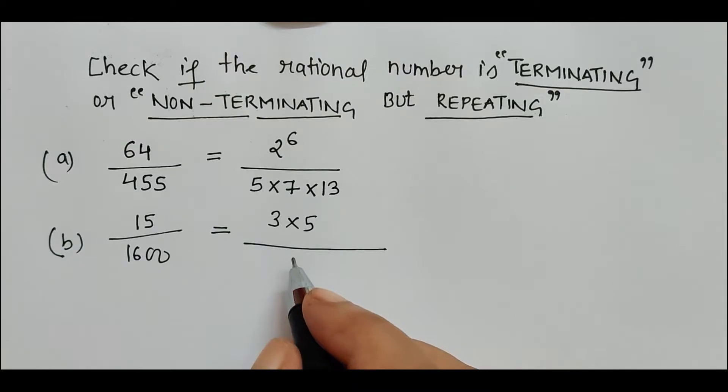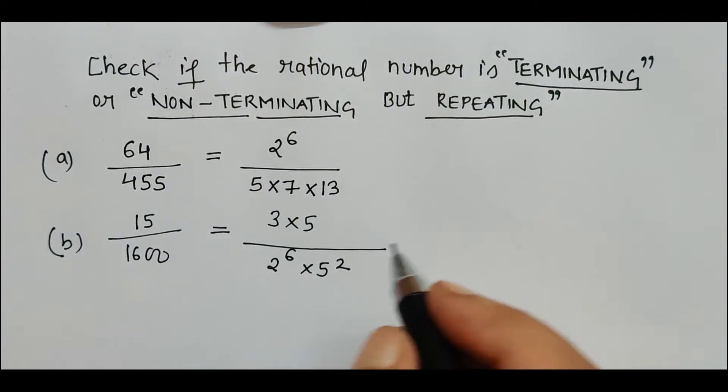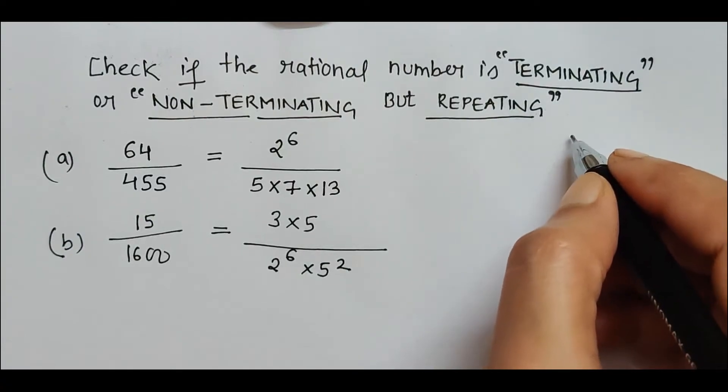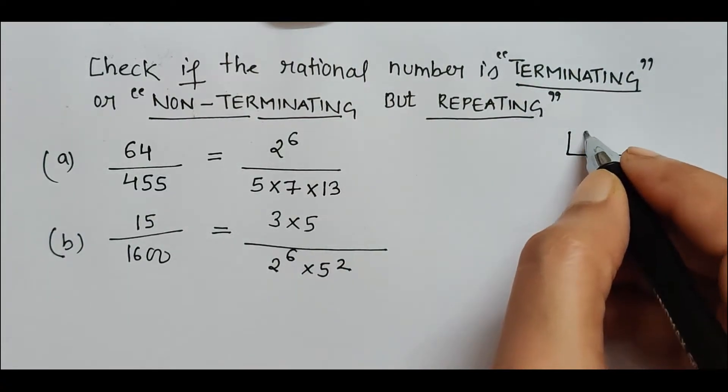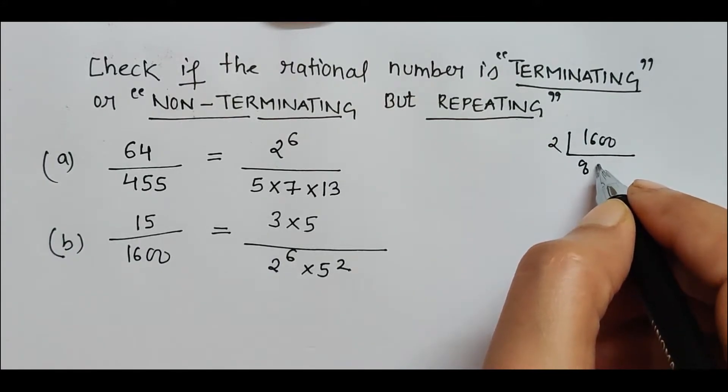The denominator will be 2 to the power 6 into 5 squared. You can find manually the prime factors of 1600 using the method we learned in junior classes: 1600, that's 2, 800, 2, 400, like that.